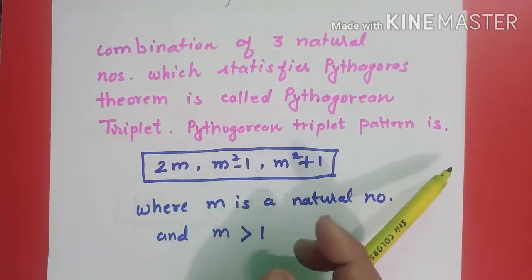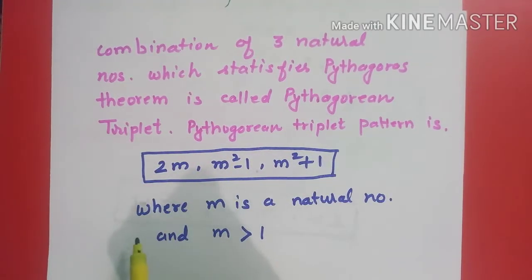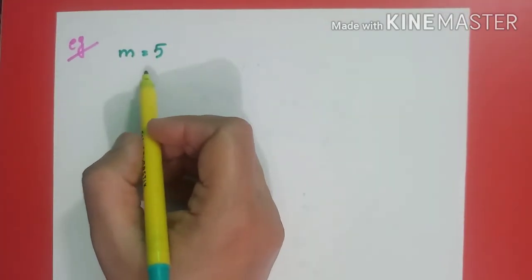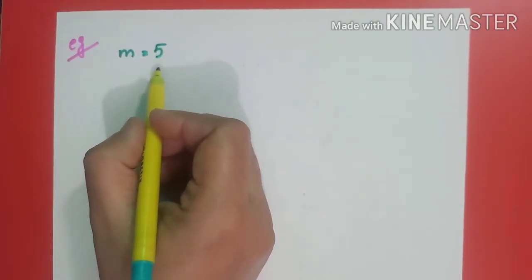The combination of any three natural numbers which satisfy Pythagoras theorem is called Pythagorean triplet. Pythagorean triplet pattern is a particular pattern of three numbers: 2m, m square minus 1, and m square plus 1, where m is the natural number which is always greater than 1. Okay students, let's clear this with one more example.